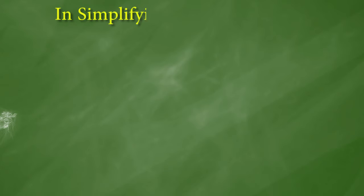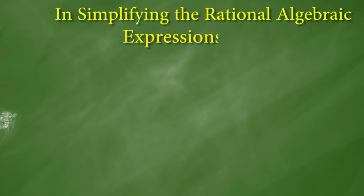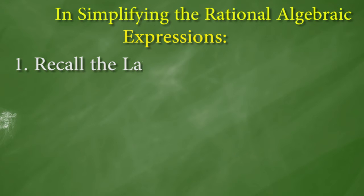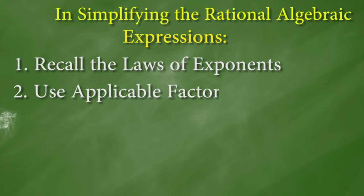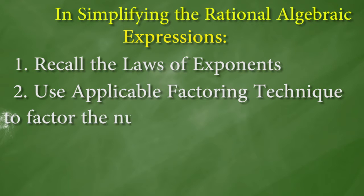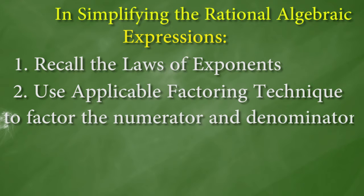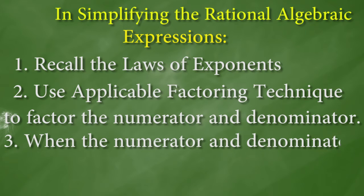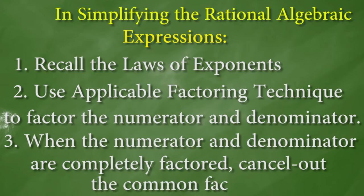In simplifying rational algebraic expressions: first, recall the laws of exponents. Second, use applicable factoring techniques to factor the numerator and denominator. And third, when the numerator and denominator are completely factored, cancel out the common factors.